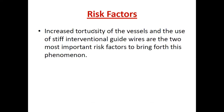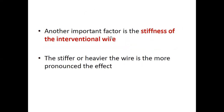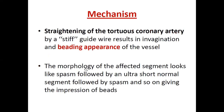The risk factors are increased tortuosity of the vessel and the use of stiff interventional guide wires — these are the two most important risk factors. The stiffer or heavier the wire, the more pronounced the effect will be. The mechanism, as discussed, is straightening of the tortuous coronary artery, which leads to invagination and beading of the vessel.